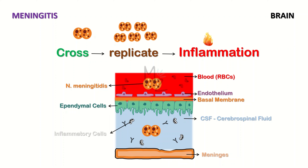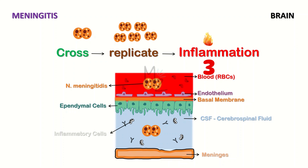Meningitis is caused when Neisseria meningitidis enters the brain. After entering, it crosses the blood-CSF barrier — the cerebrospinal fluid barrier — then enters the CSF and replicates there, causing inflammation of the surrounding meninges. To summarize the three steps: entering the brain, crossing the CSF barrier, then replicating in the CSF and causing meningeal inflammation.